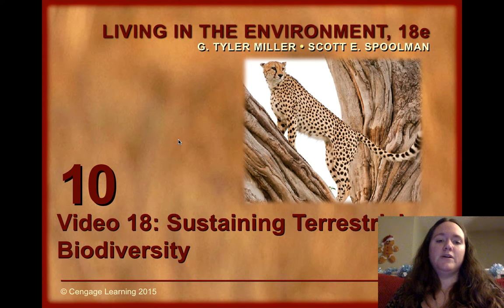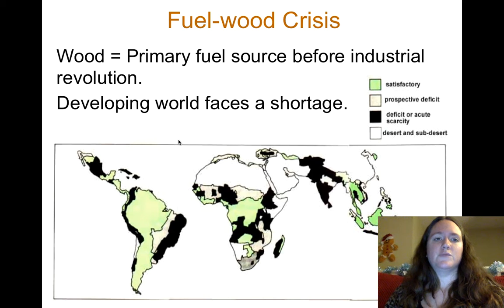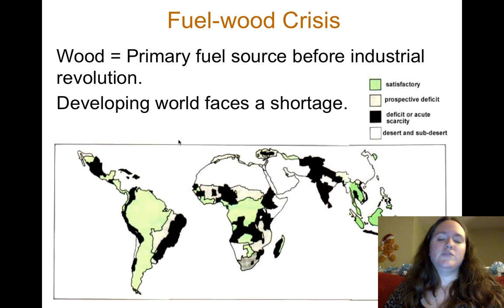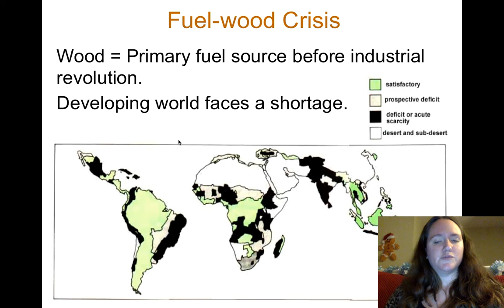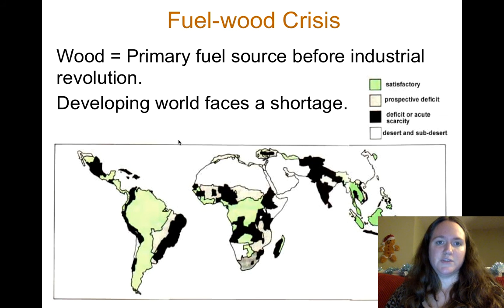Welcome to video 18 on terrestrial biodiversity. Before the industrial revolution, the primary fuel source was wood. We didn't have fossil fuels yet, and the developing world is now facing a shortage of wood because we are cutting down and deforesting areas so quickly. In the future we're going to run into problems with this if we don't correct it right now.